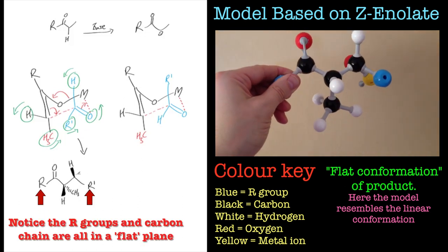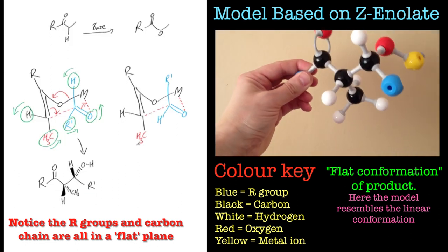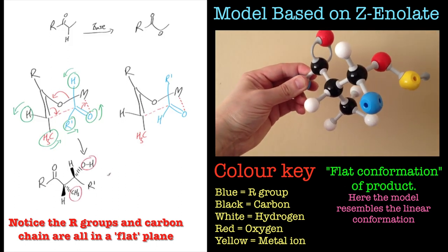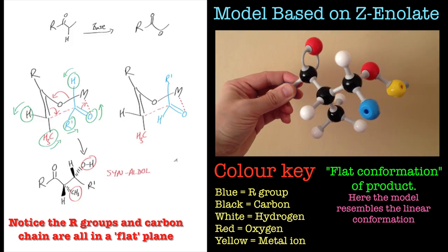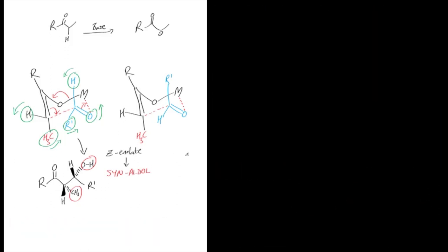Similar for the other side which has just formed, the hydrogen comes to the front now and the R group goes flat, pushes the oxygen to the back, and that gives you this syn-aldol product. So a Z enolate will lead to a syn-aldol product.